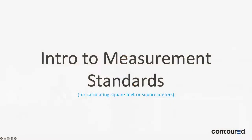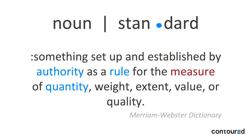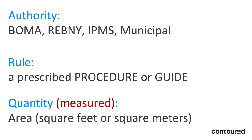I'm going to do a really high-level overview of measurement standards, specifically calculating square feet or square meters and how we use those. The first thing I want to do is look at the dictionary. Merriam-Webster defines a standard as something set up and established by authority as a rule for the measure of a quantity. In this case, our authority would be BOMA. There are other authorities: the Real Estate Board of New York, the International Property Measurement Coalition, and municipalities — cities, states — for construction with their FAR calculations.